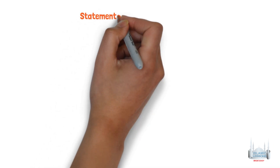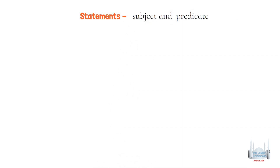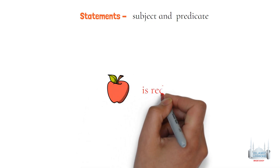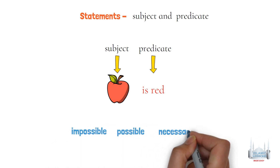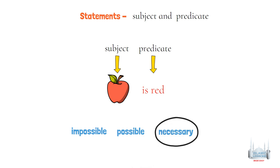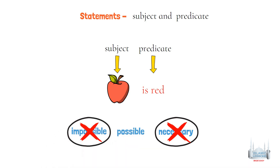Let's explain further. A statement has two parts: a subject and a predicate. A predicate says something about the subject. If I say 'the apple is red,' the apple is the subject and the redness is the predicate — it describes what the subject is. The relationship between the predicate and the subject can only have three states: impossible, possible, or necessary. Is the redness of the apple necessary? No, there could be green apples. Is it impossible for the apple to be red? No, we see apples that are red. Is it possible? Yes.